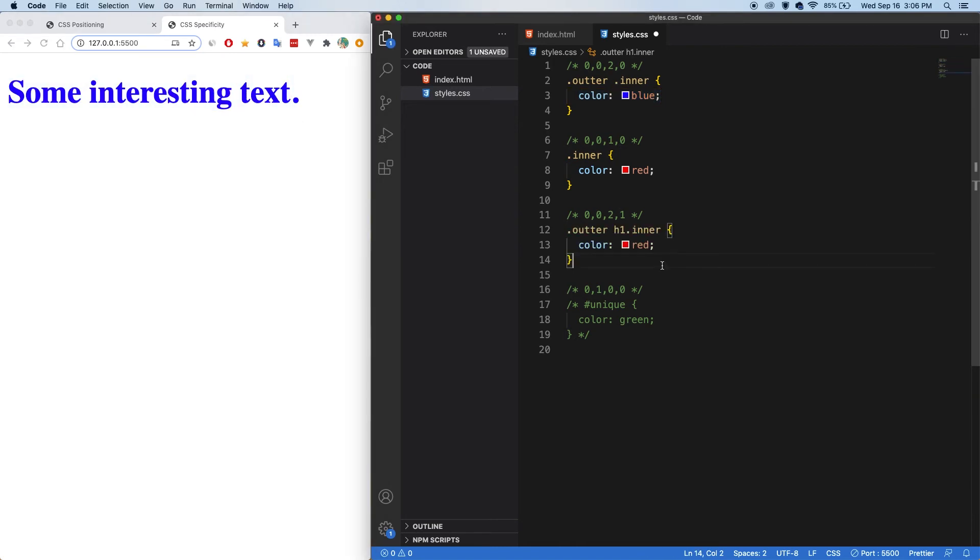So if we take it a bit further and be more specific, now we have two different classes that we're selecting and also the element tag itself. So that's why it's 0021. And if we save, the red is going to be applied. And even more specific, we're going to have an ID. So that's 0100. And that is going to beat everything else here so far. So if we save, now the text goes green.